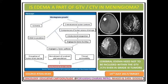Is edema a part of GTV or CTB in meningioma? Remember, cerebral edema need not be included within the GTV or CTB, even in grade 3 tumors. Meningioma growth causes edema through mechanisms including ischemia, VEGF-A secretion, angiogenic factor spillover, and recruitment of pial vasculature, which disrupts the blood-brain barrier and increases vascular permeability, causing peritumoral brain edema.